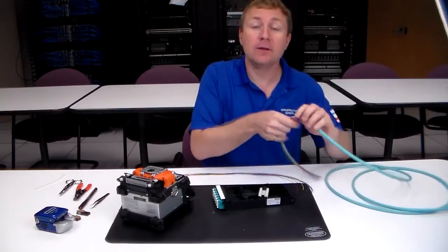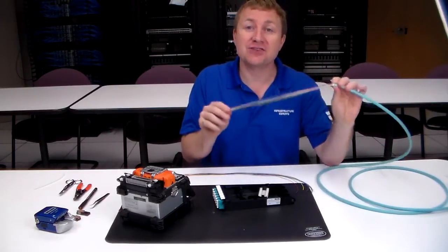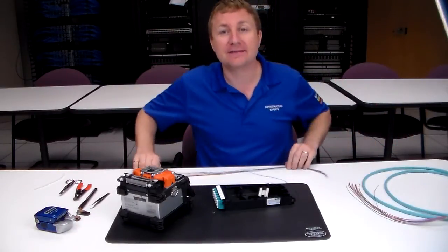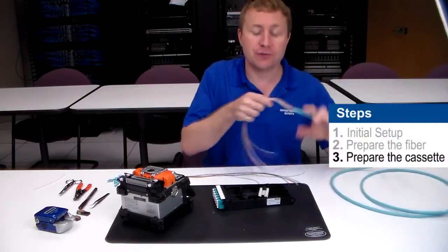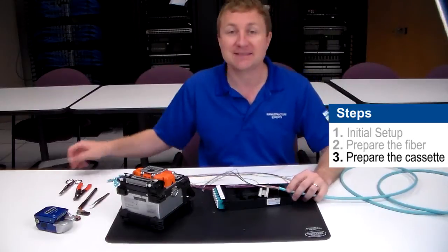So now that we've prepared the cable, we've removed about 23 inches of jacket on the trunk side and we've cut our pigtails down to about 25 inches. We're ready to start installing. First thing we're going to want to do is secure the trunk cable inside the splice cassette.